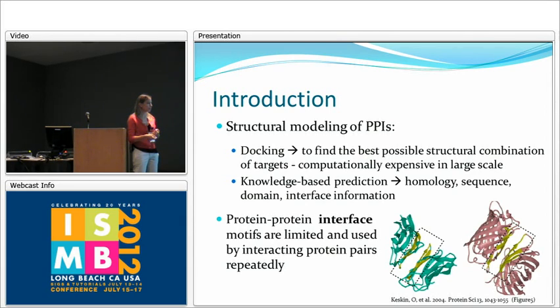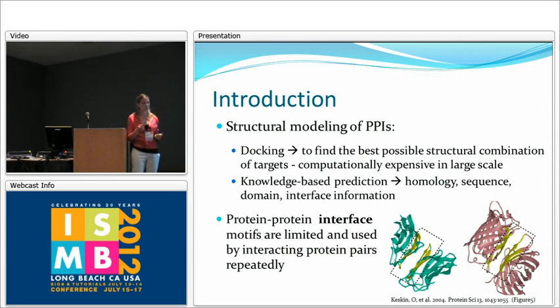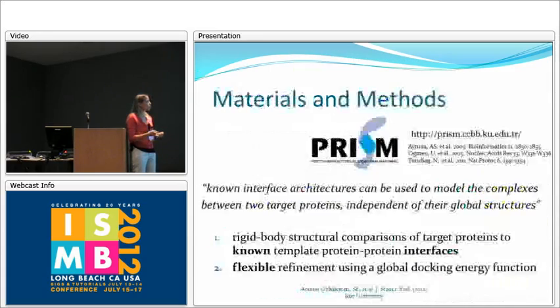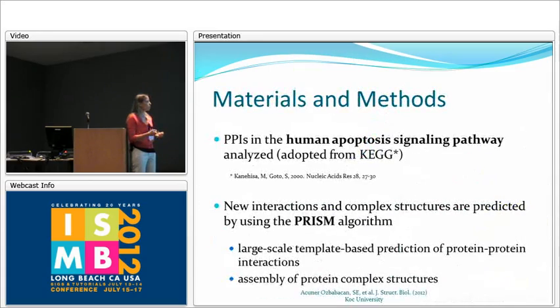The definition of an interface is the region where two proteins interact with each other, composed of interacting residues. It is known that these interface motifs are limited and may be used repeatedly by different interacting protein pairs. For example, two interacting pairs can have similar interface regions even though the interacting proteins are really different from each other.